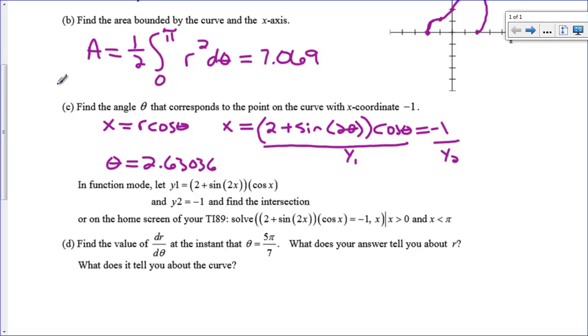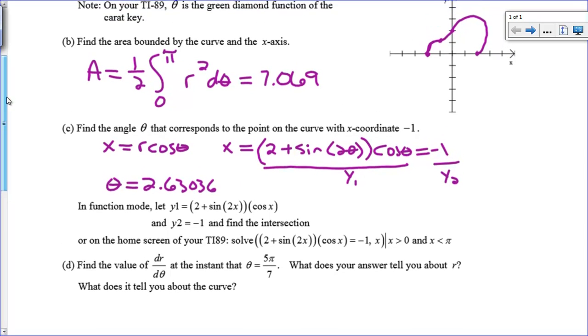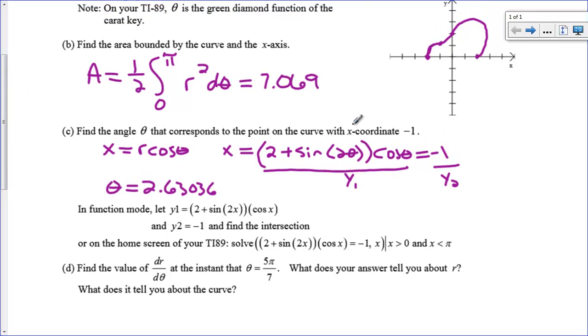Now if you want to think about degrees, you're going to multiply that times 180/π to get degrees. And if you do that, you get 150.688. So if you can believe it, when θ equals about 150 degrees, that's when we get that x-coordinate of -1. And I can definitely believe that.